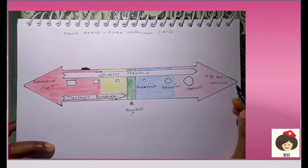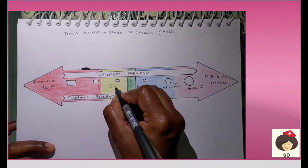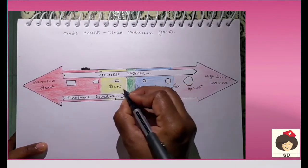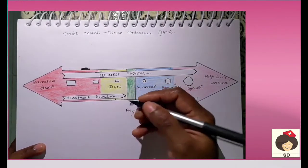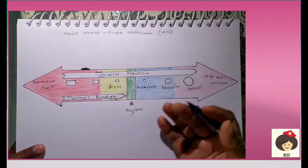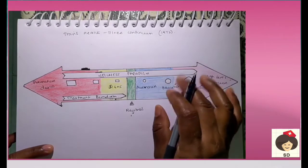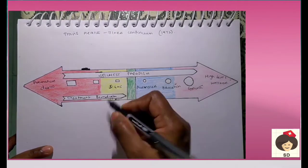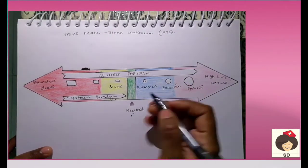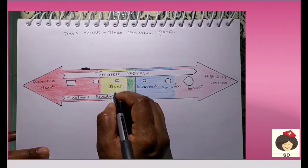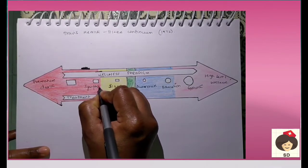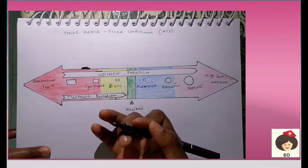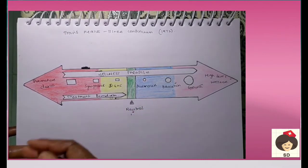On the other hand, if the person is not following healthy practices, he may develop signs. Signs are objective — that means what we observe on the patient. For example, if a person comes with a fever, we check the body temperature by thermometer or by touch, and we find the body is warm — that is called a sign. When signs develop further, they go into symptoms. Symptoms are subjective — what the patient complains of — such as pain, fever, or palpitations.